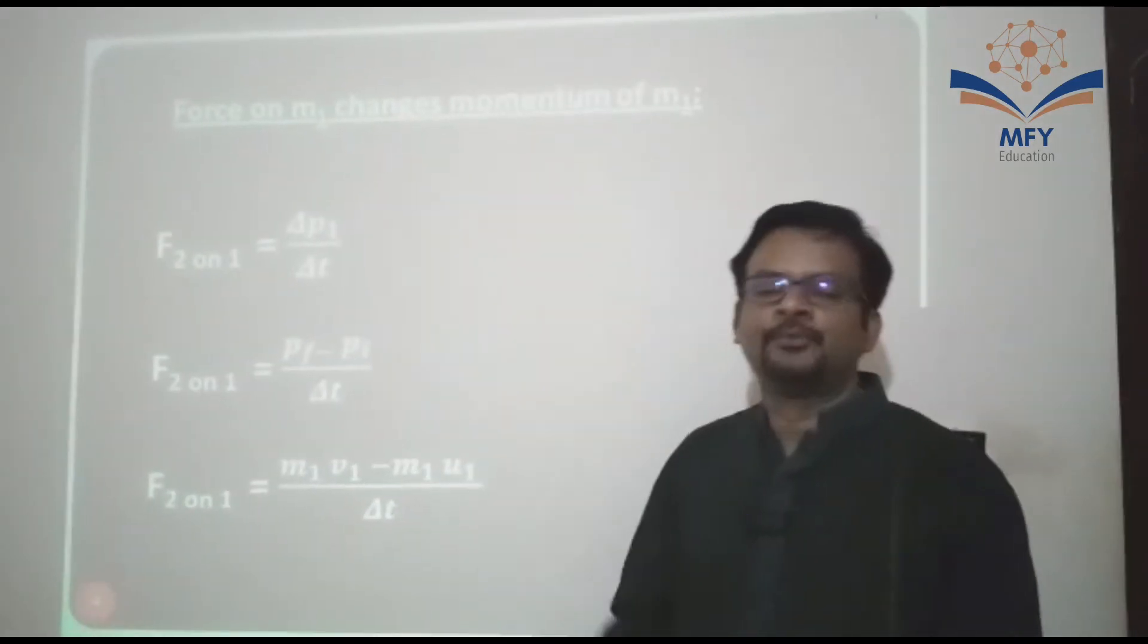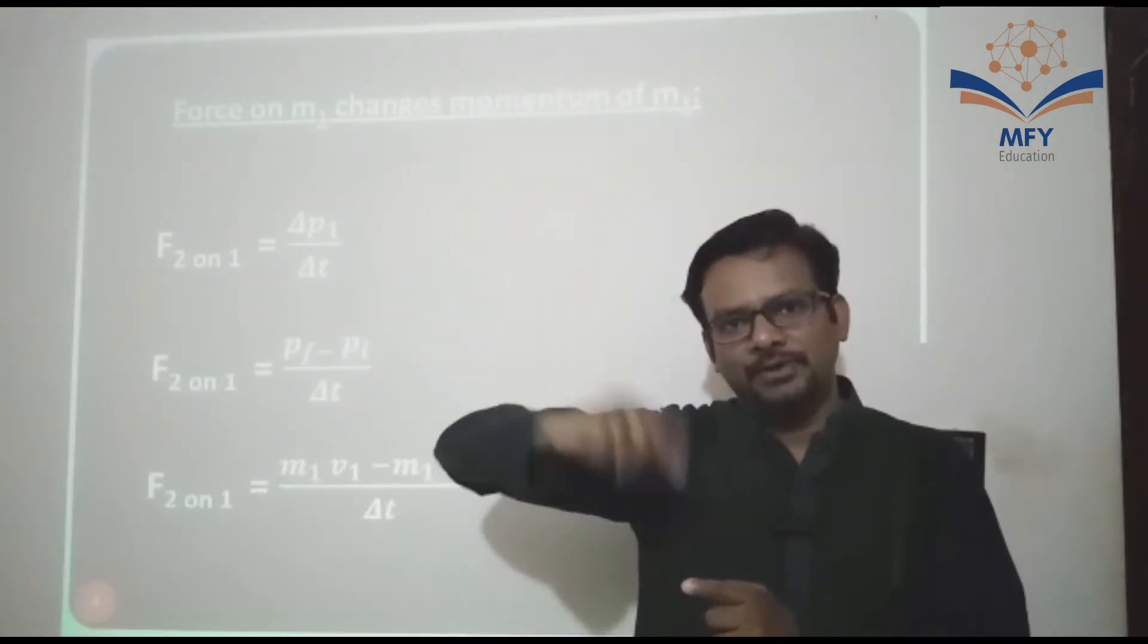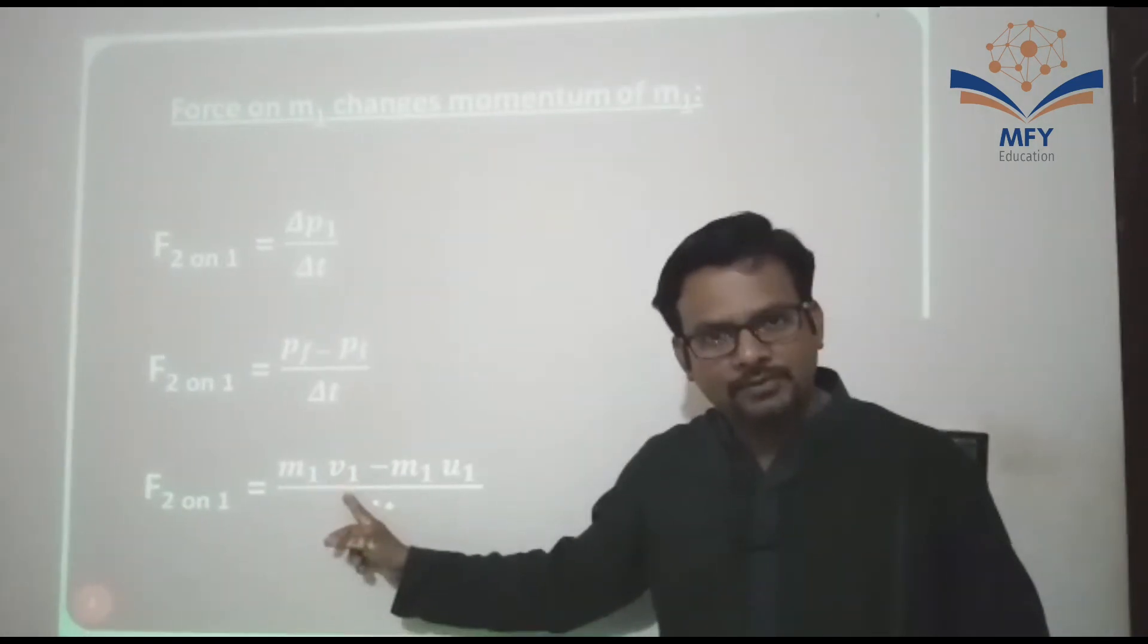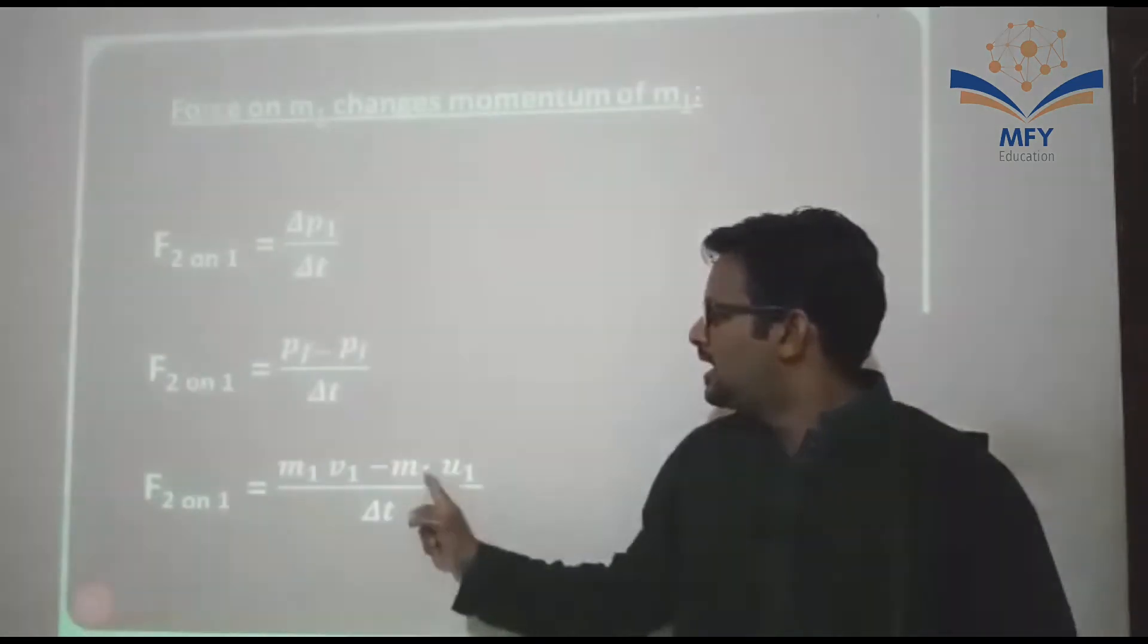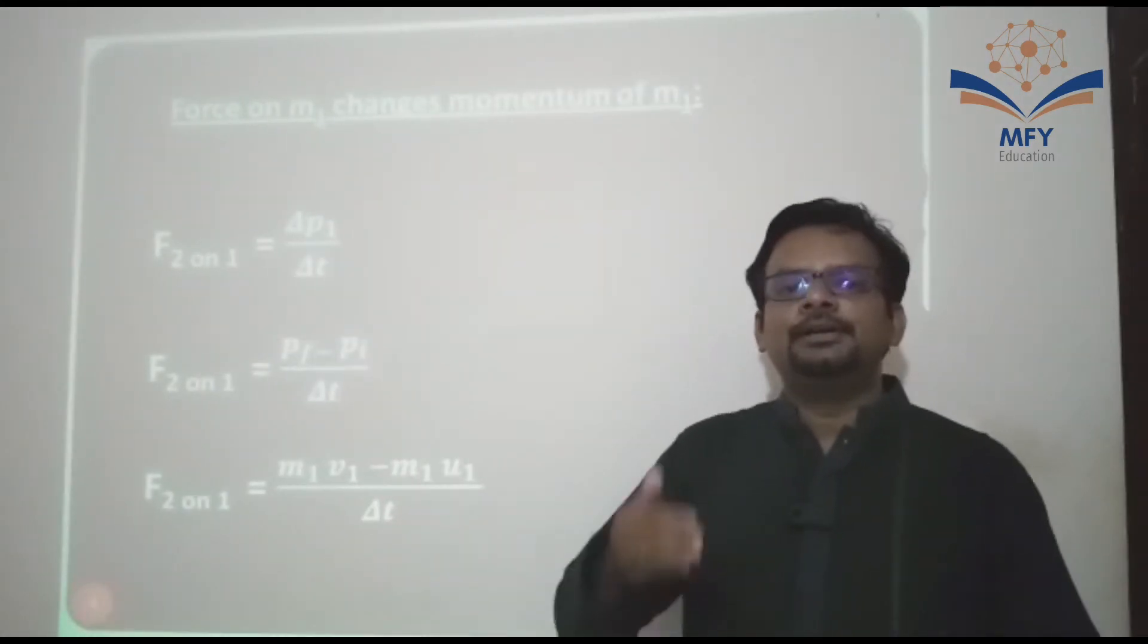Body M1's initial velocity is U1 and final velocity is V1. So final momentum M1V1 minus initial momentum M1U1. Delta T is like this. Clear?